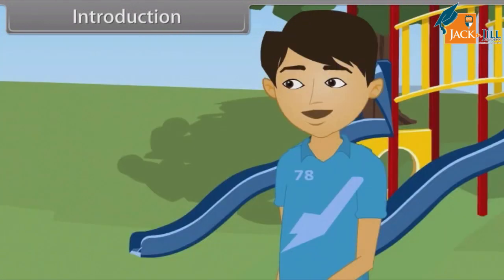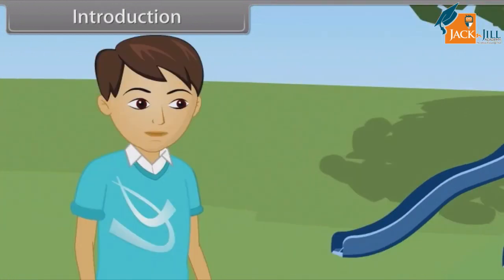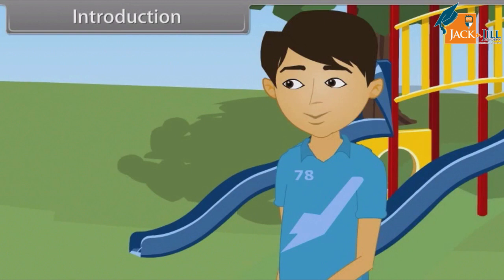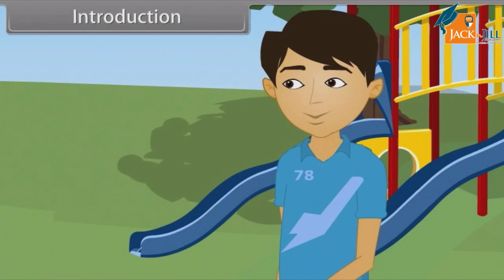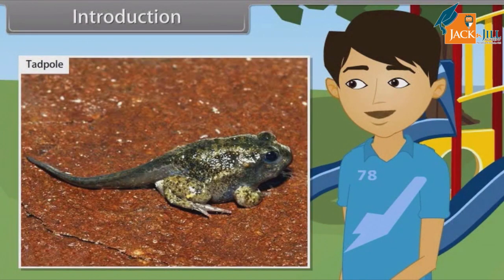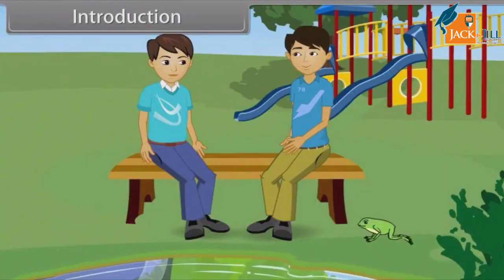They come out during rainy season because there is no threat of getting dried. How do they breathe? Frogs use internal gills and their skin for breathing underwater, and they also use lungs for breathing in air. Their skin is slippery with mucus and is always kept moist. Adult frogs do not have a tail, but a tail is present in the tadpole. In this lesson, you will learn morphology and anatomy of animals.